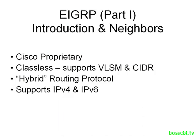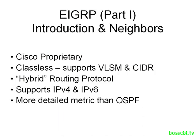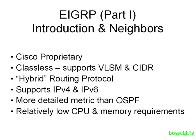EIGRP supports IP version 4 and 6. When we take a look at the metrics of EIGRP, which we have a dedicated tutorial on, you're going to see that they are a bit more detailed and complicated than OSPF. Finally, EIGRP is a relatively low resource requirement routing protocol — it's not going to eat up a lot of CPU, memory, or bandwidth.